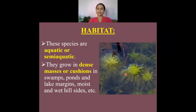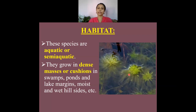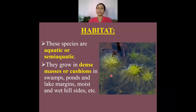Regarding the habitat of this genus, Sphagnum plants are mostly aquatic or semi-aquatic. They grow in dense masses forming a cushion-like structure and are mostly found in swamps, bogs, as well as moist and wet hill sites.